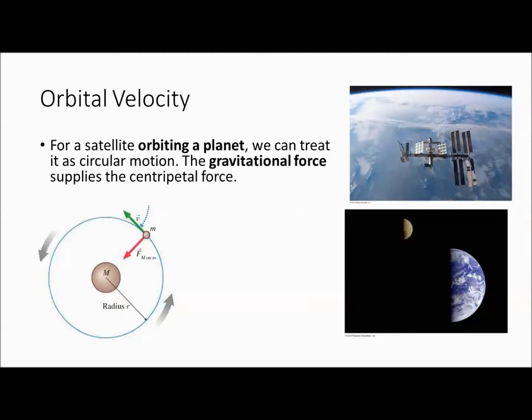So objects that are orbiting, they are in free fall. And we're going to treat them with our rules for circular motion because they are moving in an approximate circular path, even though sometimes it may be elliptical. So for a satellite orbiting a planet, we can treat it as circular motion. The gravitational force is what is keeping it pulled towards the center. So that's what's going to give it the centripetal force. And the velocity is tangent to the movement.